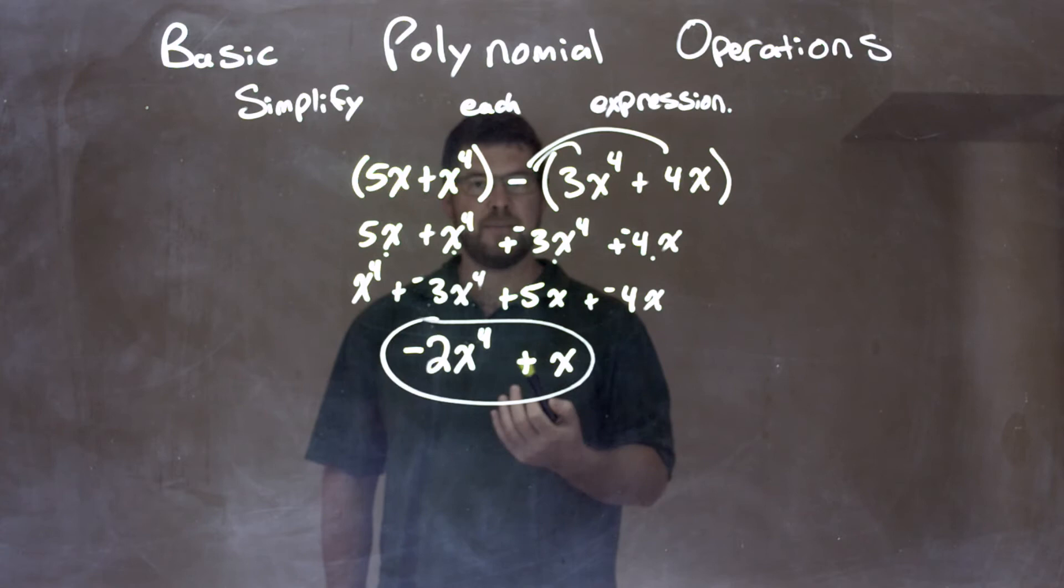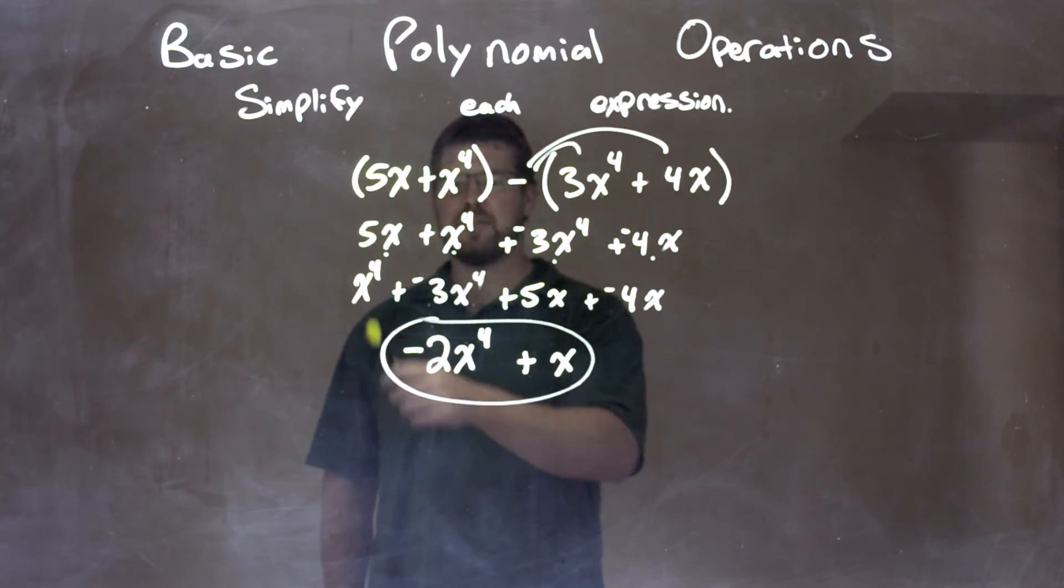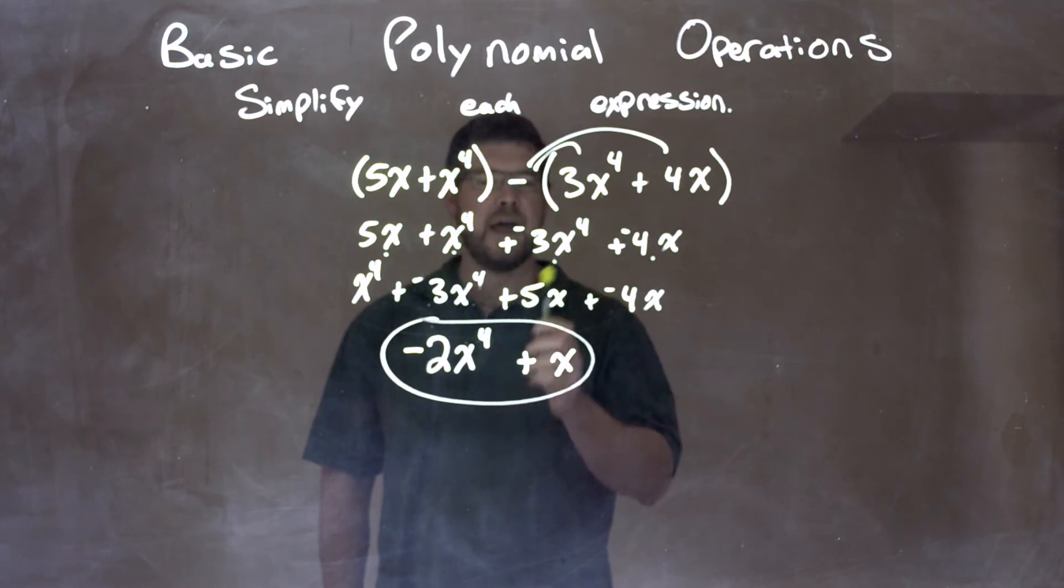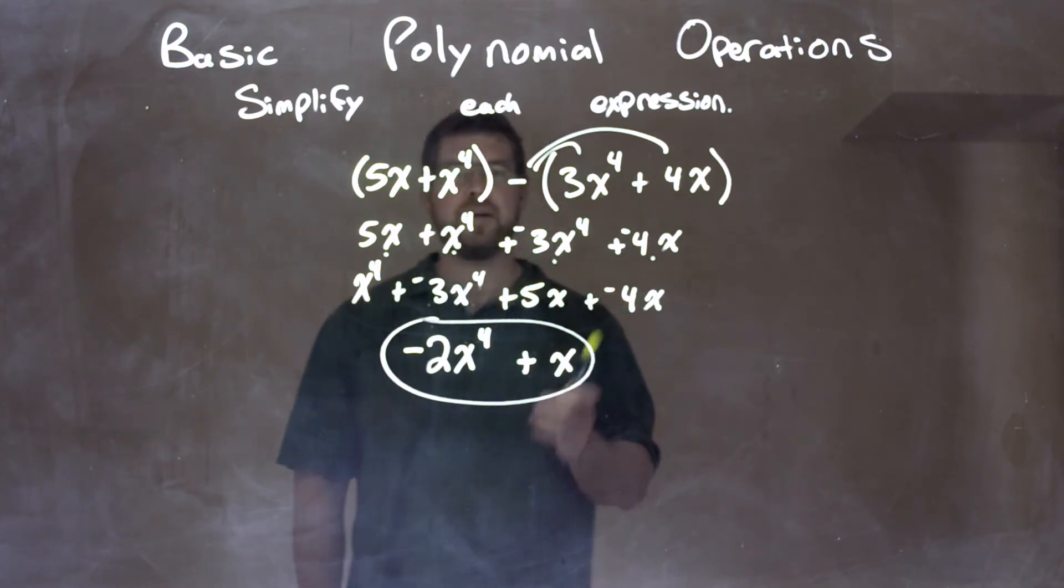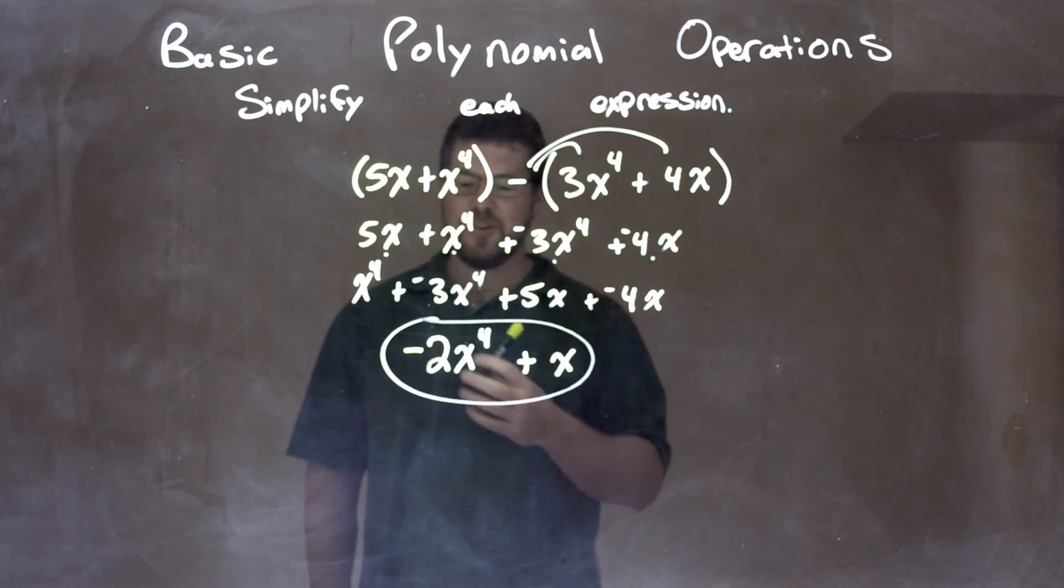Then from there, I simplified, combined my like terms. x to the fourth plus a negative 3x to the fourth is negative 2x to the fourth. And then 5x plus a negative 4x is 1x. So again, our final answer here is negative 2x to the fourth plus x.